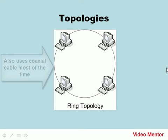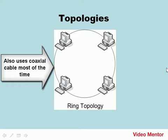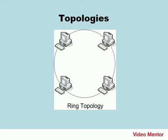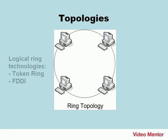The physical ring, like the bus, is limited in speed, and if you want to add or remove computers, you'll have to bring the whole network down first. In addition, there are other types of ring topologies, including logical ring setups like token ring and configurations like FDDI.